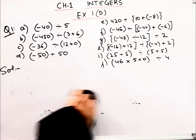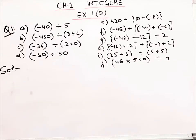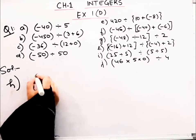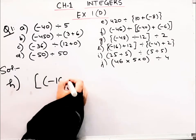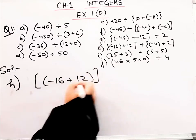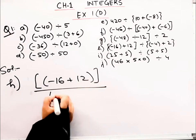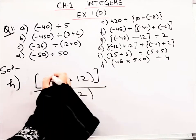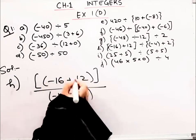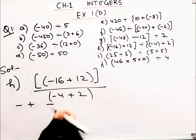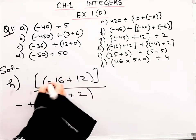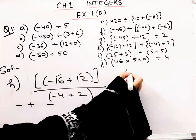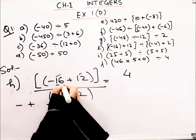Now let's do the part (h). Here we have minus 16 plus 12 divided by minus 4 plus 2. Minus plus plus minus. So 16 minus 12, how much will it be? 4. But what will the sign be? The number that is bigger. So 16 has minus.